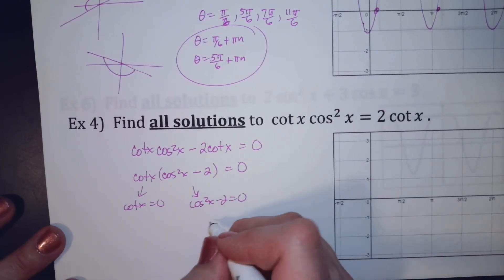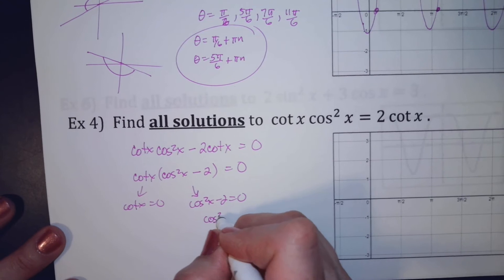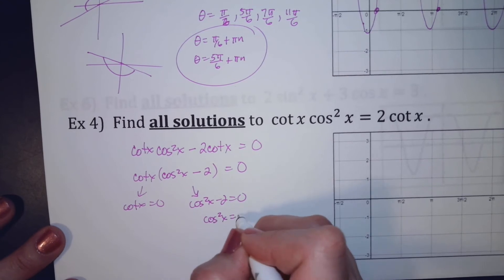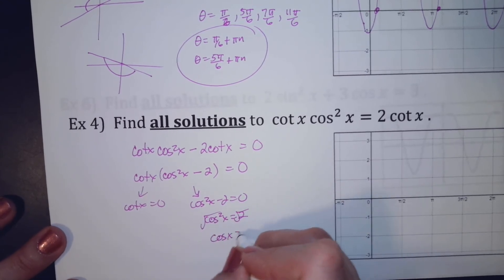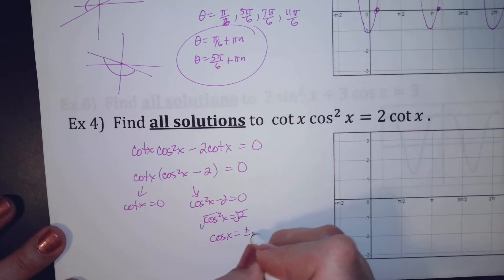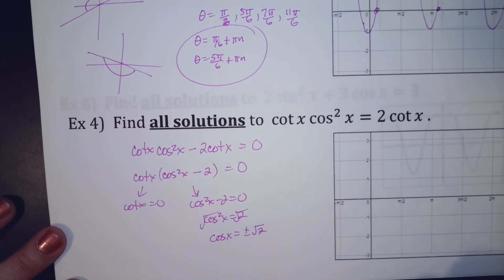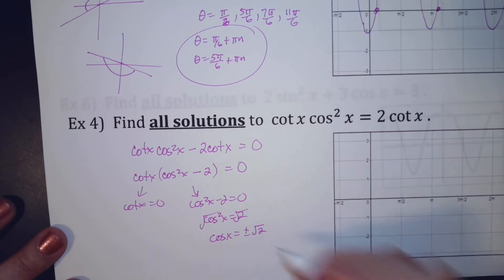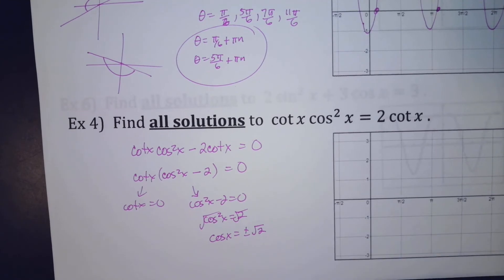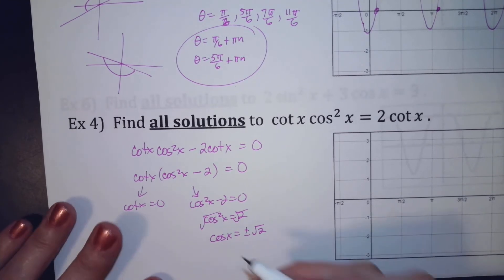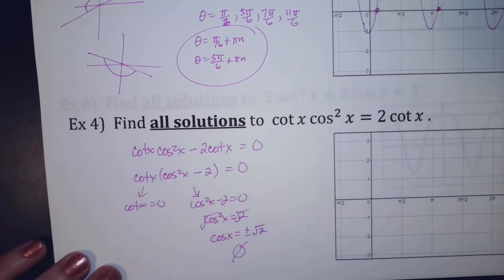So I add 2 to both sides — cosine squared equals 2, then take the square root: cosine equals plus or minus radical 2. Radical 2 is about 1.41, and cosine can't be bigger than 1 or smaller than negative 1. So this is too big — no answer from this part.